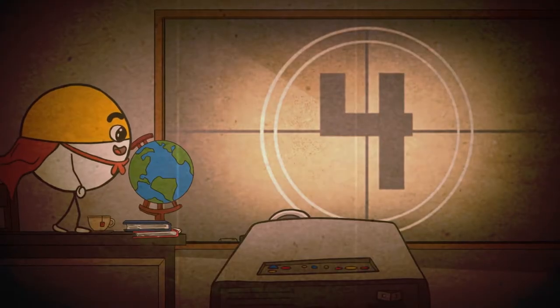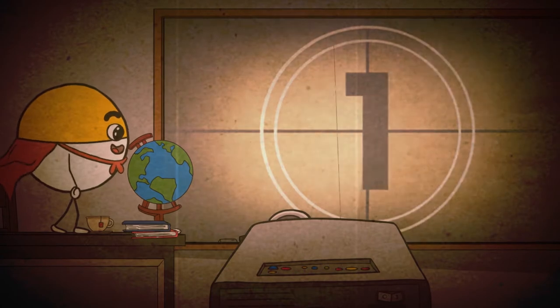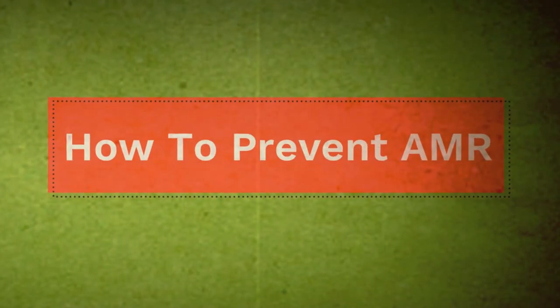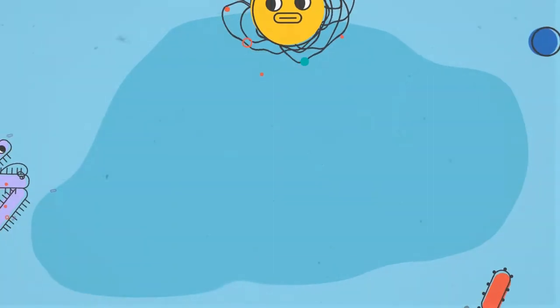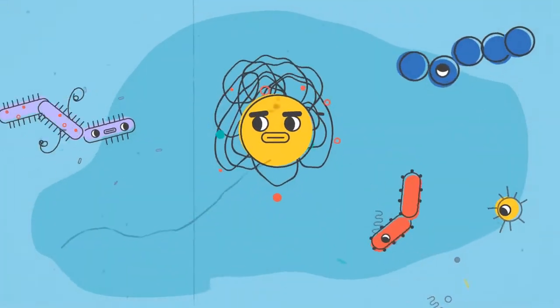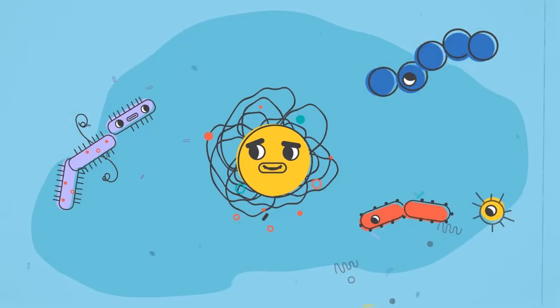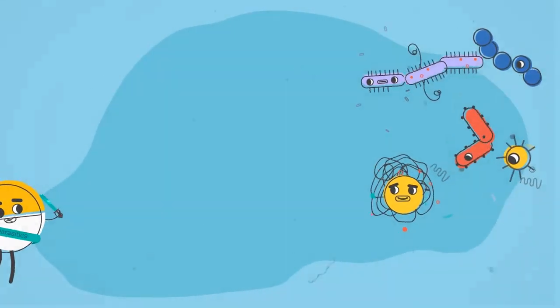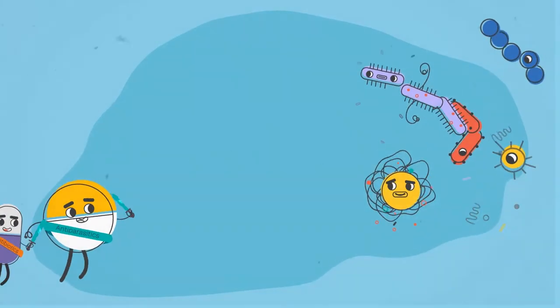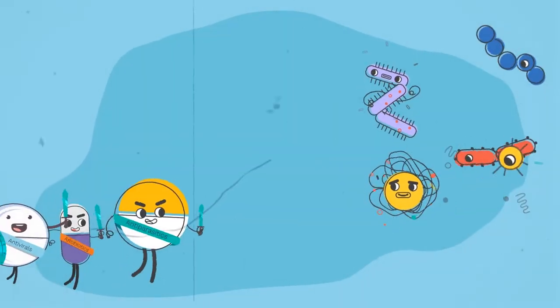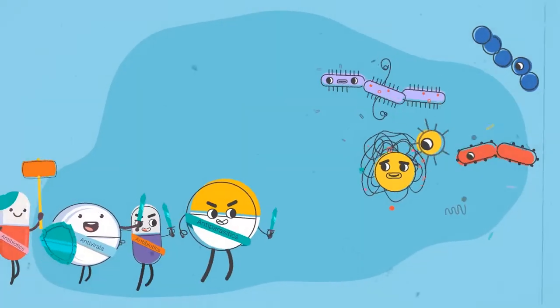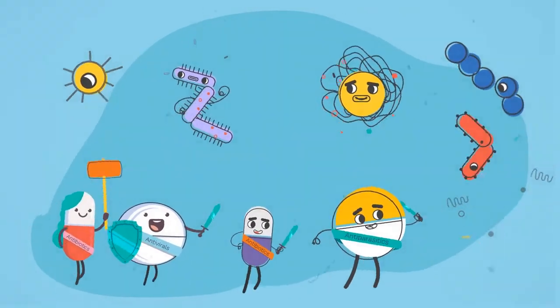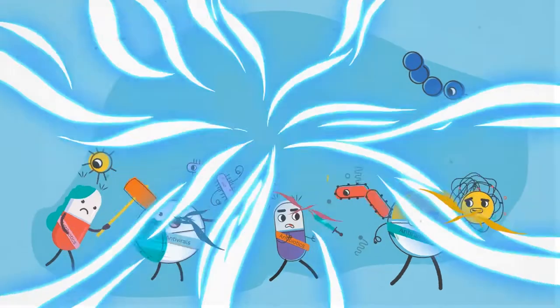How to prevent AMR. Microbes are tiny germs like bacteria, viruses, fungi, and parasites that can cause infections. Antimicrobials, which include antibiotics, antivirals, antifungals, and antiparasitics, are medicines used to prevent and treat infections in humans, animals, and plants.